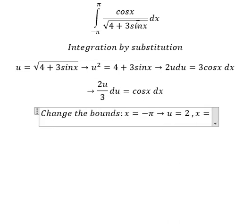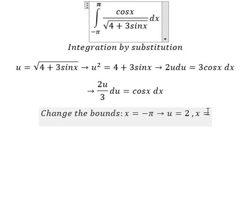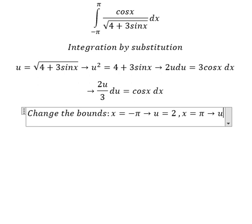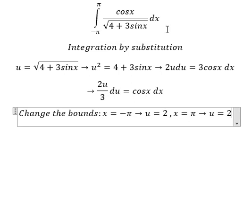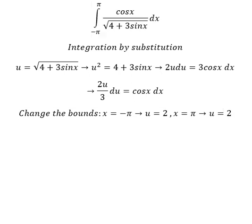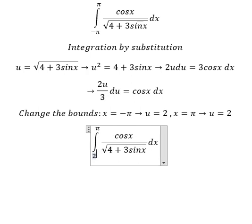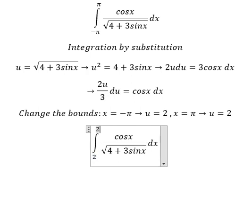Similar for the second one, we put this one here, so you get u equals to 2. So negative π we change to 2, this one you get 2.